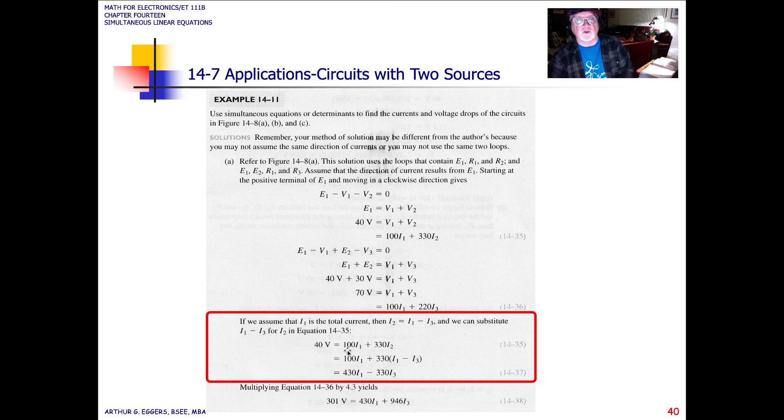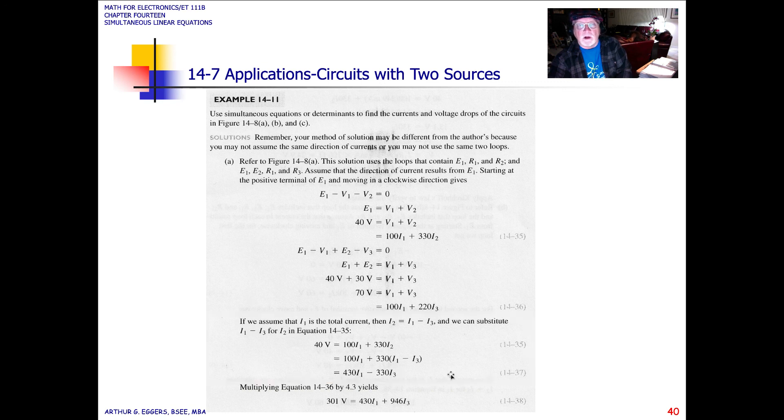So we end up with our expressions, 40 volts equals 100 I1 plus 330 I2, which was 14-35 as identified. And if we make that substitution for I2, and the expression I2 is equal to I1 minus I3, here's our substitution. Now we have turned this expression into two unknowns in terms of I1 and I3.